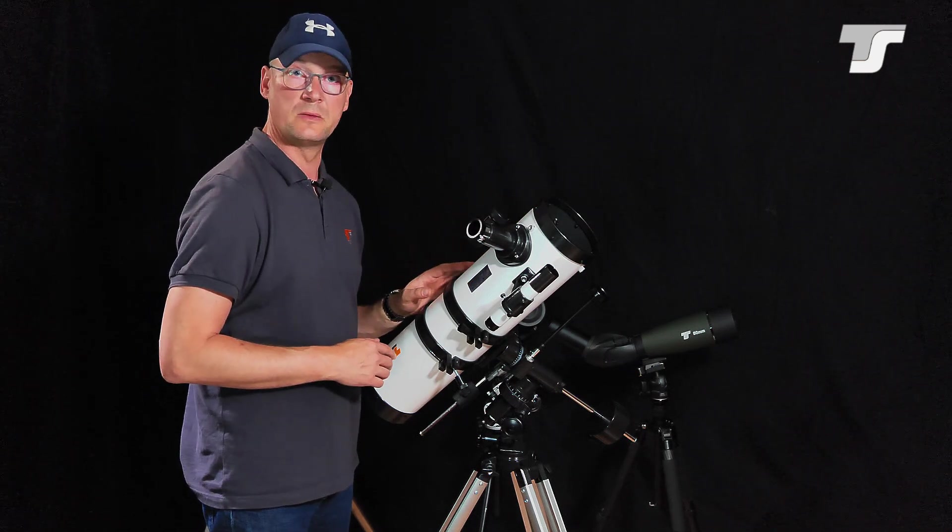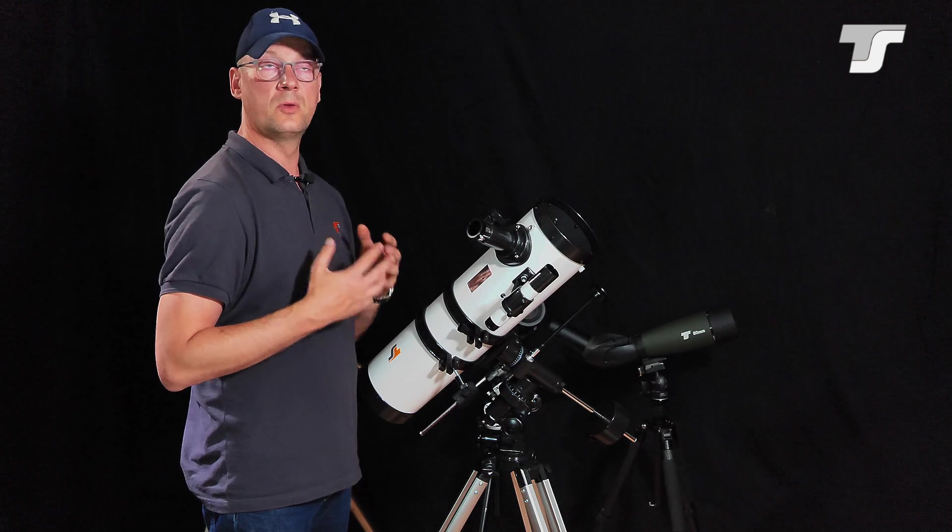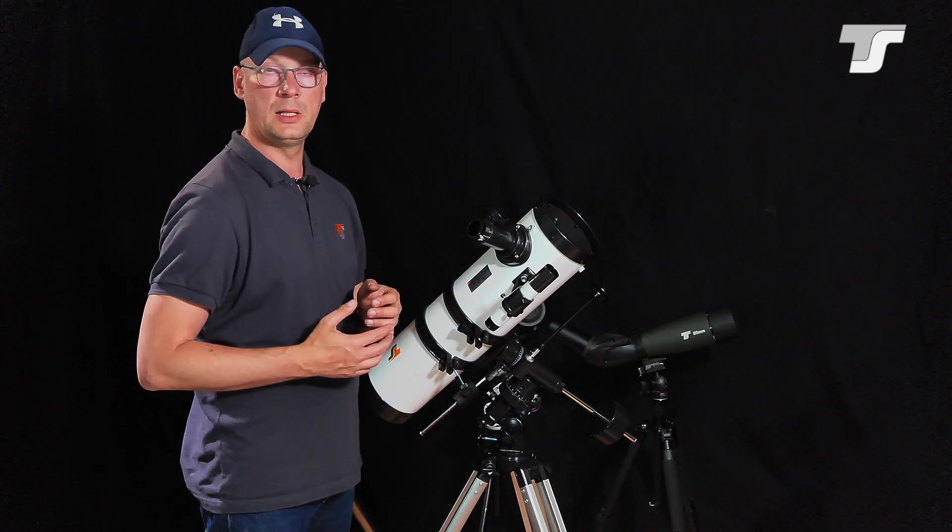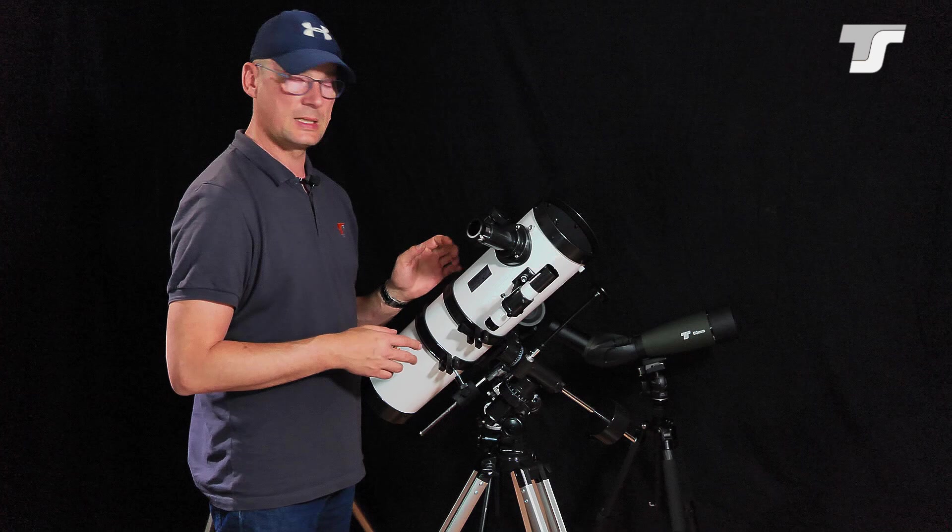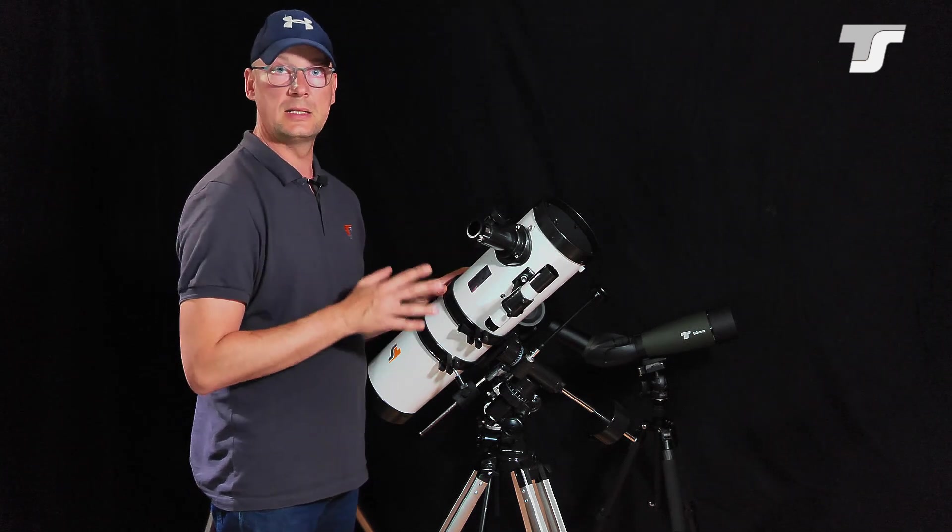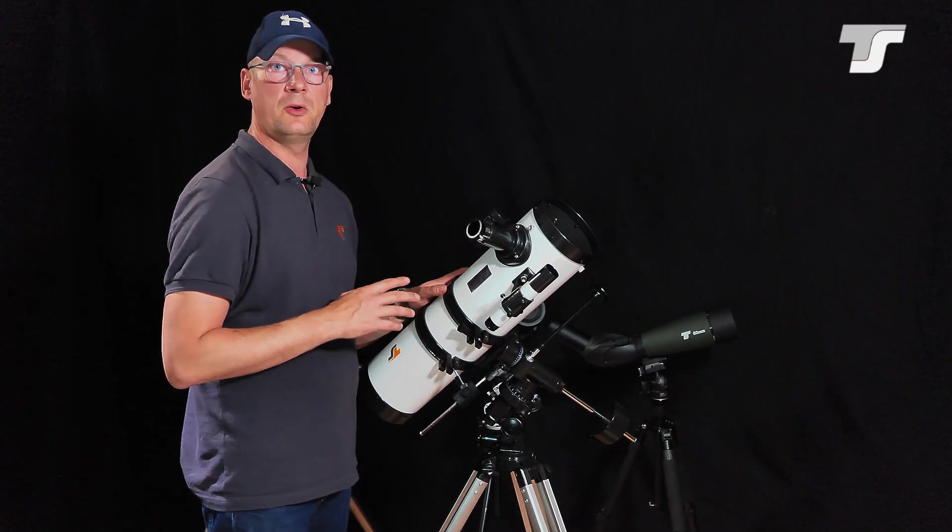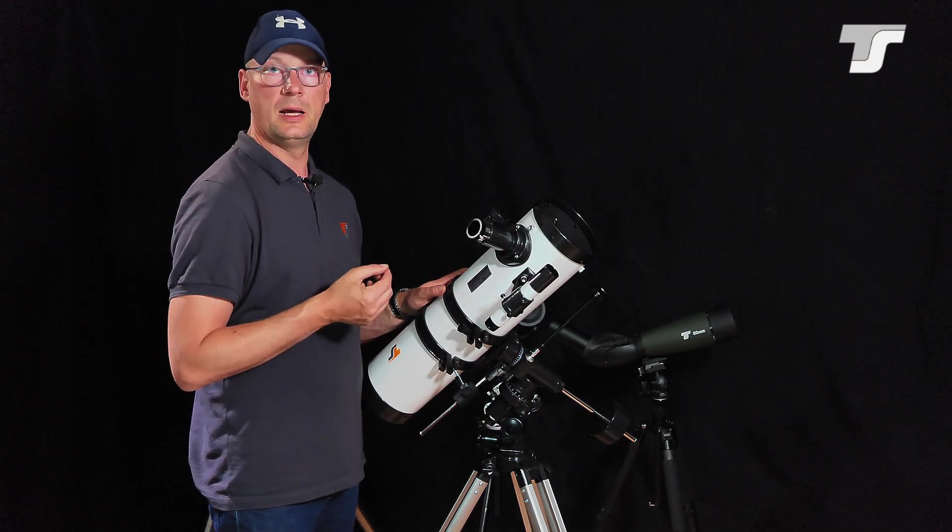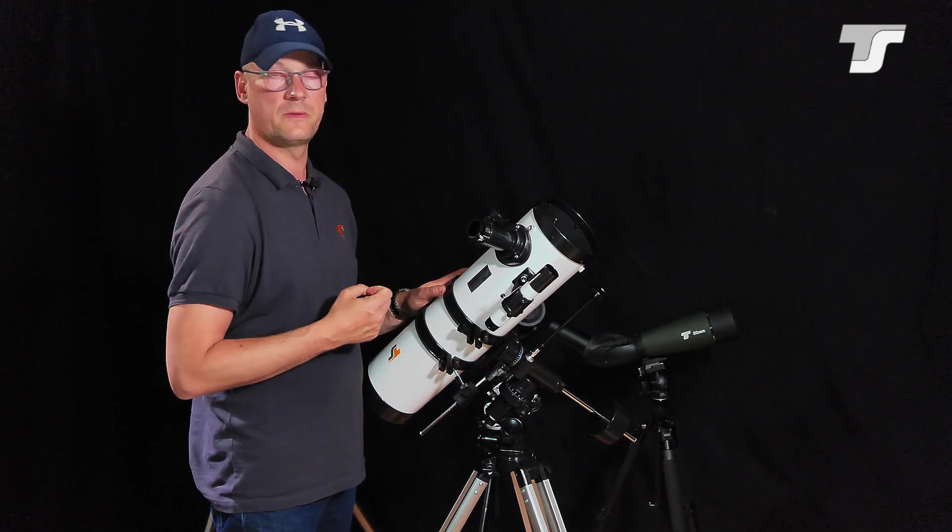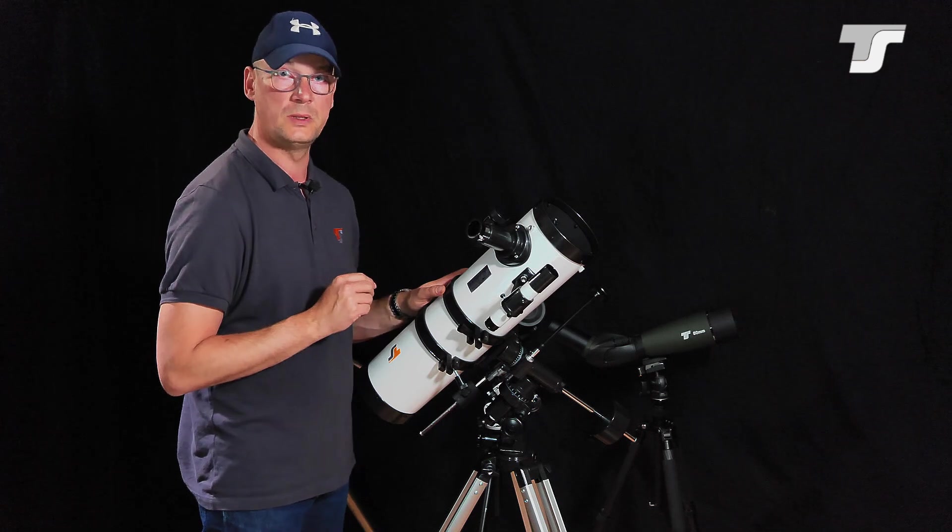This is really impressive. There are for example foil filters available to dim the light by a factor of some thousand, and then you can watch the sun. This is a very interesting task. You can see the surface of the sun and sunspots, something like this, but only with a proper filter.